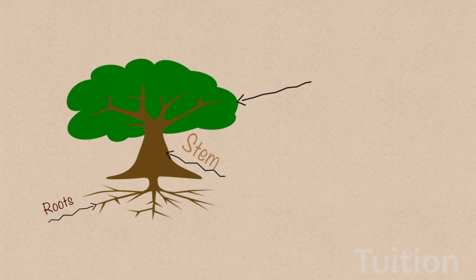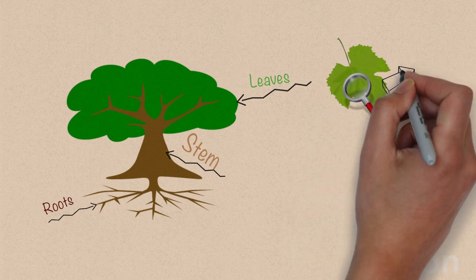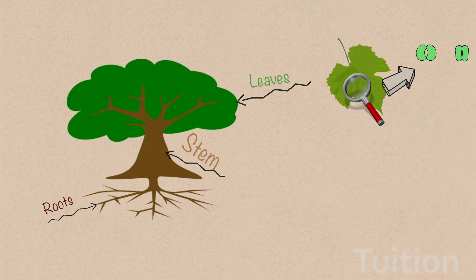Roots, stems and leaves of plants exchange gases for respiration separately. We already know leaves of plants have tiny pores called stomata which is used for the exchange of gases.